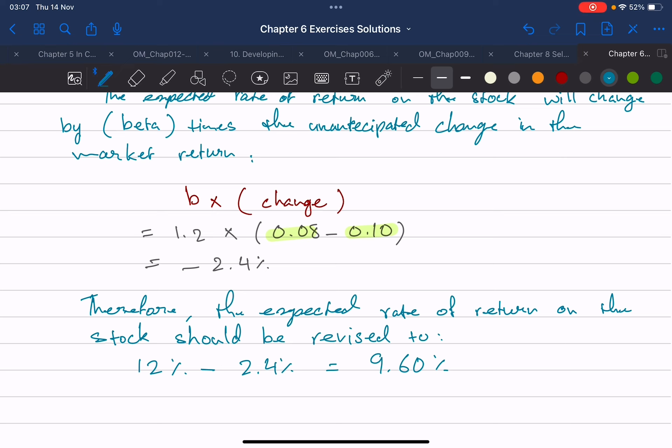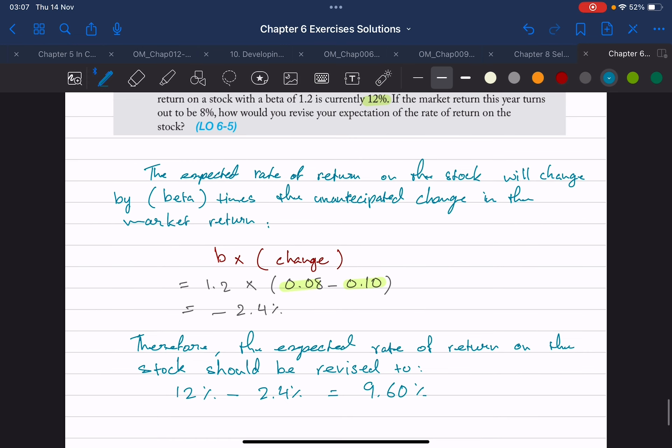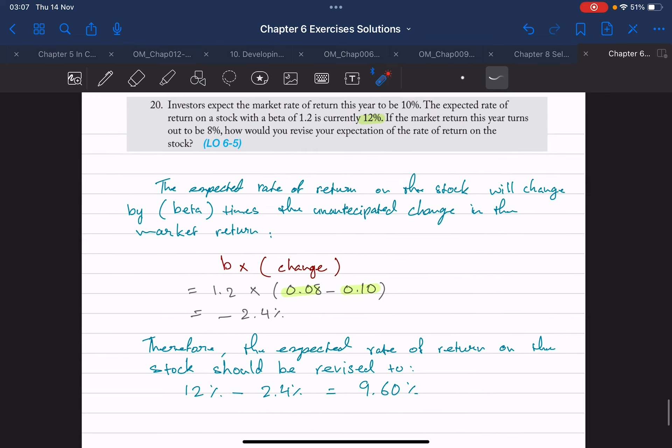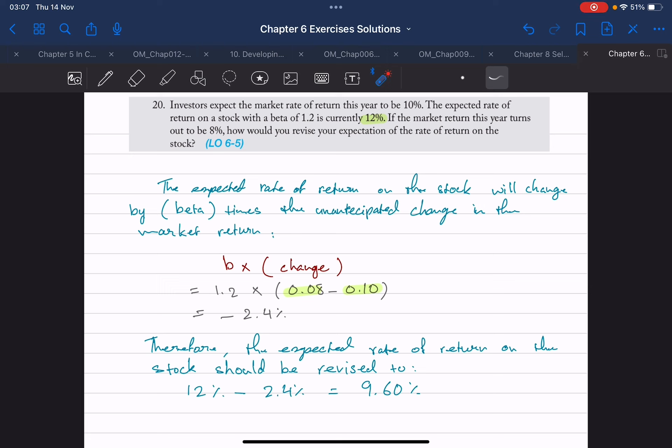Pretty simple, pretty straightforward if you understand what beta stands for. If you don't understand what beta means, this question would probably not make much sense to you. But if you understand what beta means, it should be straightforward. What is the change that occurred in the market expectations? We take that change and we multiply it by the given beta for that particular stock. It will give us the impact on the stock. And then you take that impact and you apply it to the actual expected return on that stock, and you will get your new revised expected return on the stock.